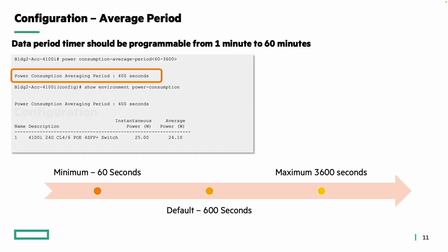Looking at the configuration, the average period timer is programmable from one minute to 60 minutes: the minimum is 60 seconds, the default is 600 seconds, and the maximum is 3600 seconds. For example, on the 4100i access box consuming around 25 watts instantaneous and 24.10 watts average, the configuration command to set the averaging period is: power consumption-average-period followed by the desired time in seconds — for example, 400 seconds.